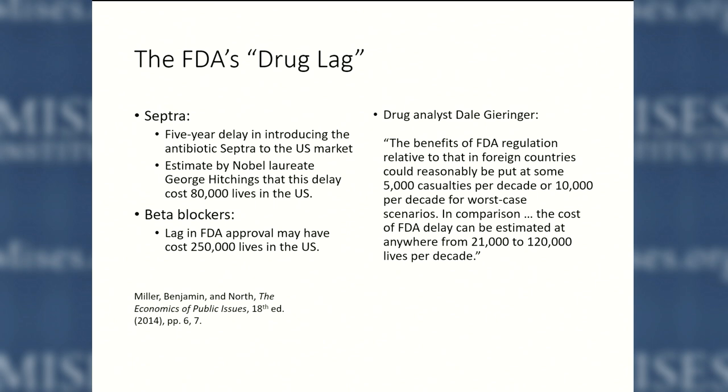Drug analyst Dale Geiringer said that the benefits of FDA regulation relative to similar regulation in other countries could reasonably be put at some 5,000 to 10,000 casualties per decade — those are deaths you're avoiding. In comparison, the cost of FDA delay can be estimated at anywhere from 21,000 to 120,000 lives per decade. The FDA is going to point at cases like thalidomide, a drug administered for morning sickness that had been approved in Europe but not fully approved here, and it ended up causing tragic birth defects. The FDA says, because we were careful, you didn't get those birth defects here. But that's looking at only one side of what's going on.